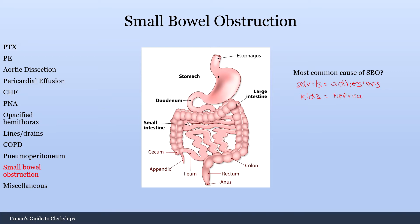This is a very common pimp question — you're probably going to get this on your surgery rotation. Number one in adults: adhesions. Number one in kids: hernia.